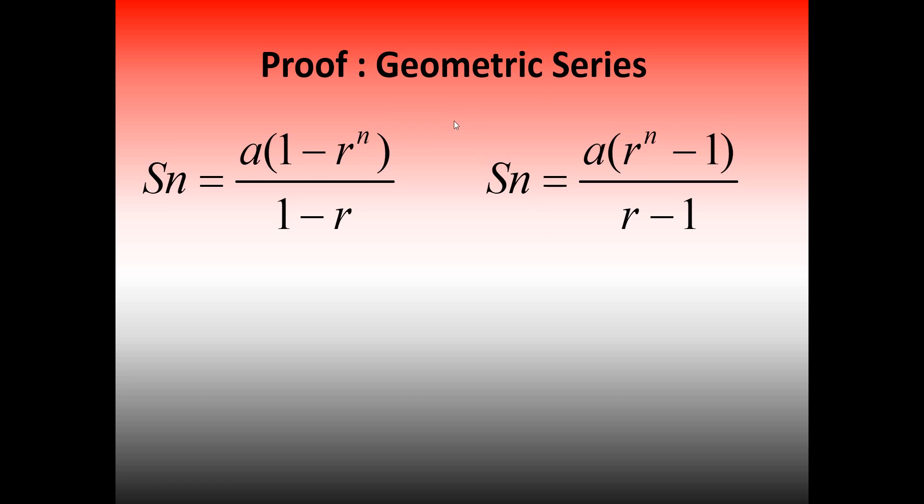Hi, in this video we're going to look at the proof for the Sn formula for a geometric series, which is a times (1 minus r to the power n) divided by (1 minus r), or a times (r to the power n minus 1) divided by (r minus 1).